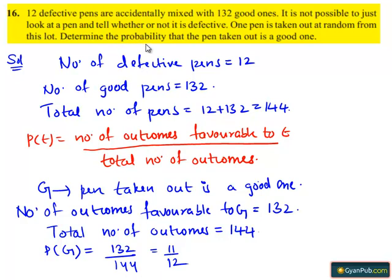Therefore, the probability that the pen taken out is a good one is 11 divided by 12.